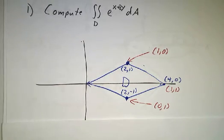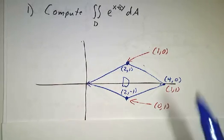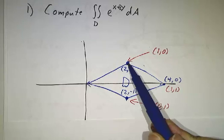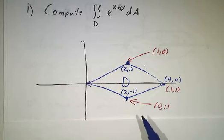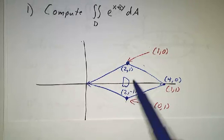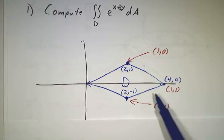And the way we're going to do it is we're going to pick new coordinates, u and v, so that in the new coordinates, this point winds up being (1,0), this point's being (1,1), this winds up being (0,1), and this region D in the new coordinates is just the unit square.